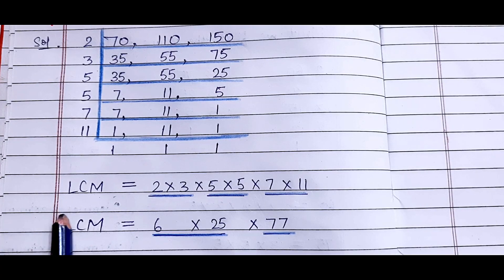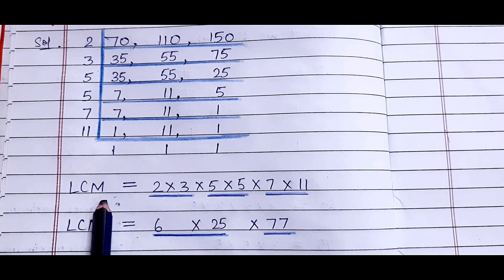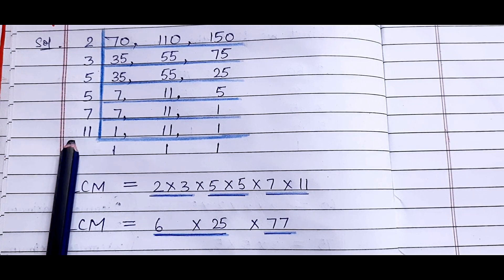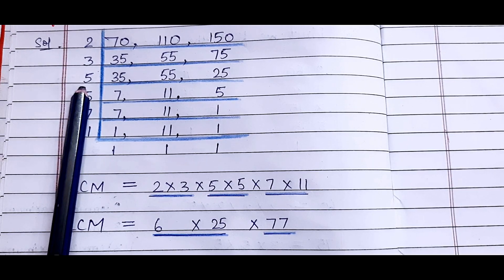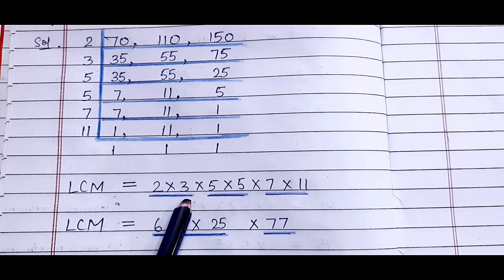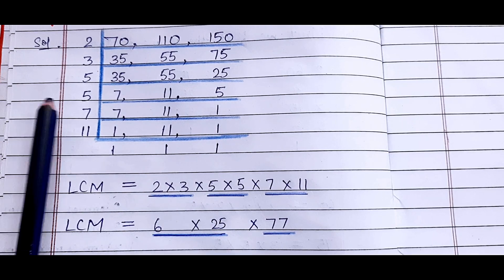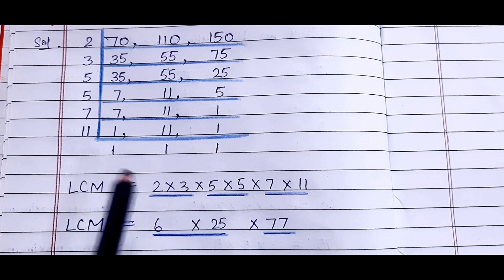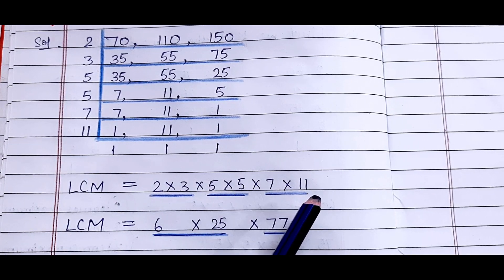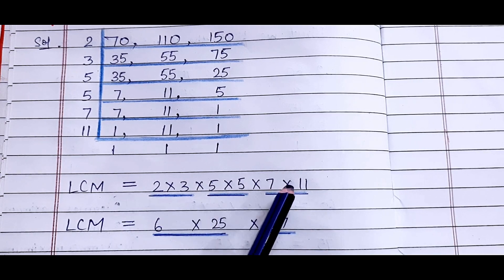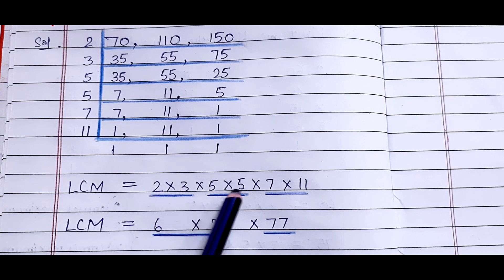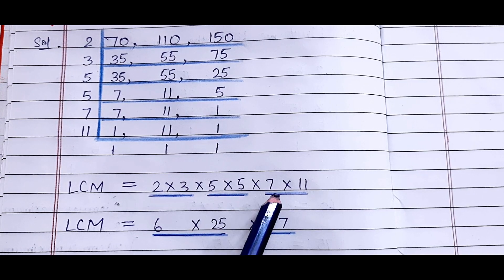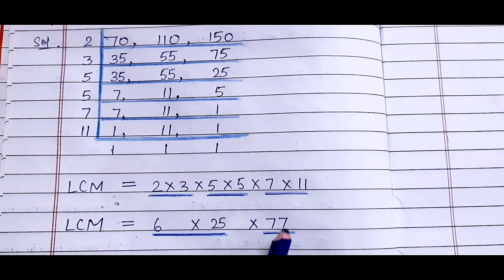Now see, how to find out the LCM. Write all these prime factors: that is 2 × 3 × 5, then 5 × 7 × 11. Now solve these numbers. 2 × 3 = 6. 5 × 5 = 25. 7 × 11 = 77.